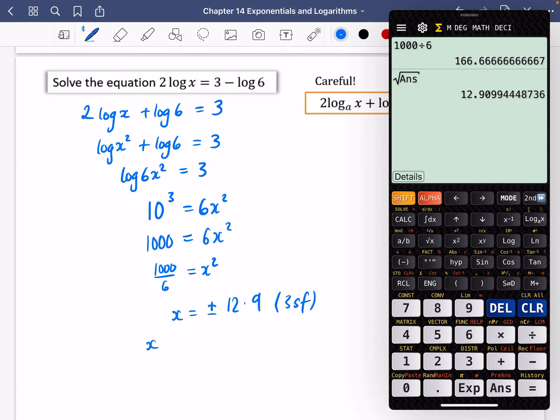But remember, x has got to be greater than 0. So x is going to be equal to 12.9 to three significant figures. For the same reason in that previous question, we can't take the log of a negative number. So we can't have minus 12.9 there.